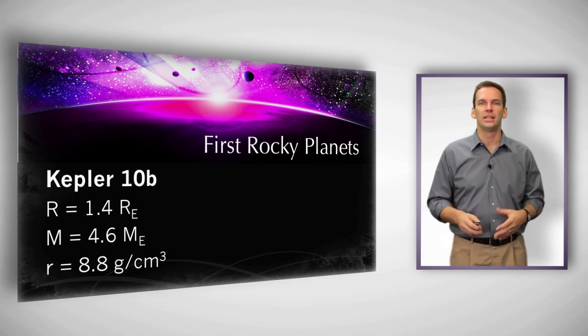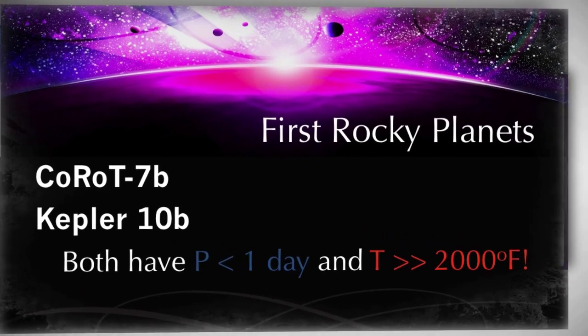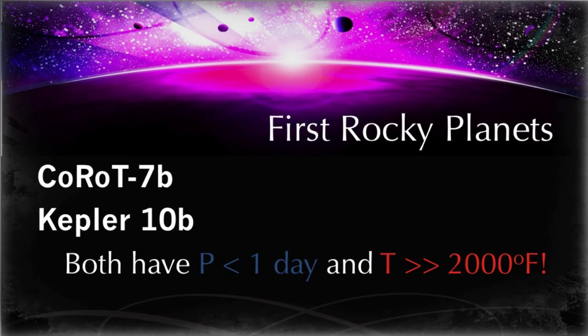Now, both of these planets had temperatures well over 2,000 degrees Fahrenheit. So these are not remotely habitable planets. They're very close to their parent stars. But what it does say is that astronomers are developing the capabilities, this was demonstrating that astronomers had the capability to detect Earth-sized planets around stars that kind of looked like our Sun.